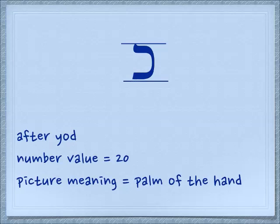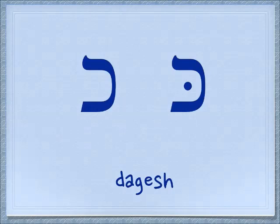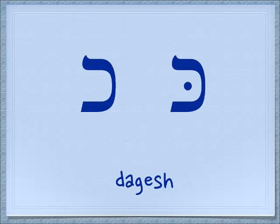The picture meaning of the Kaf is the palm of the hand. You remember when we learned the Pei, we learned that it had two sounds — one with a dot called a dagesh and one without — and we have the same thing for the Kaf. When we have the dagesh in the Kaf it's a hard sound, but without that dot it is everybody's favorite noise to make in Hebrew — it's in your throat.